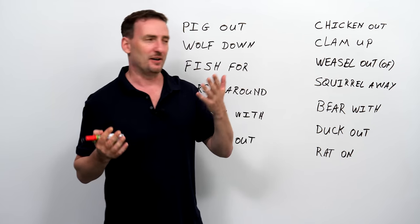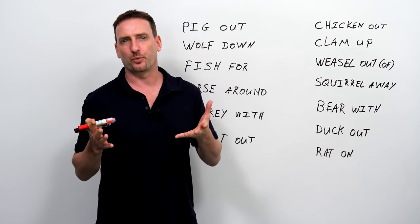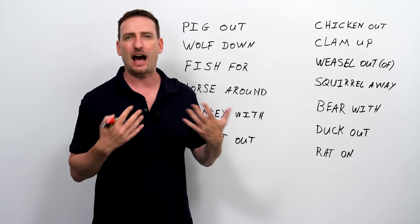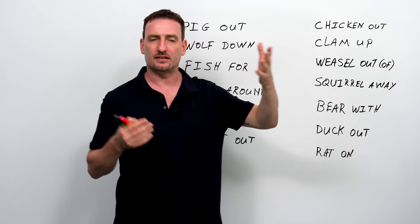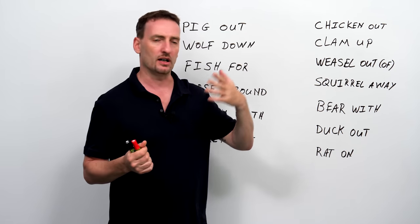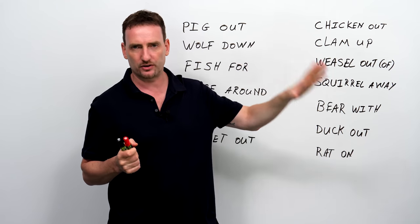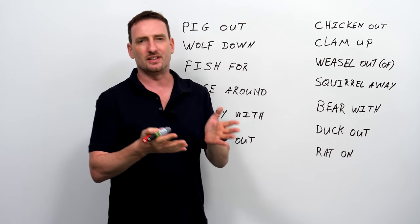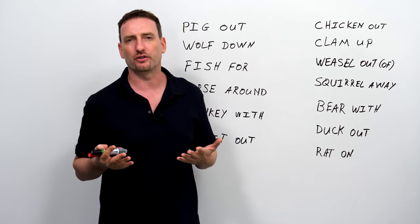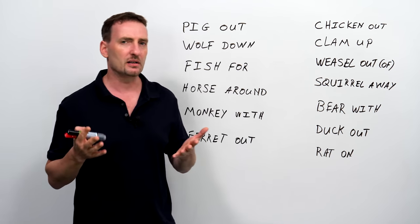Chicken out. A lot of people probably heard of the word chicken to mean, like, coward, or somebody who's afraid of something. So if you chicken out of a situation, or if you want to do something, or you promise to do something, and then you chicken out, it means that you decided not to do it because you were too afraid. Maybe a little bit cowardly.